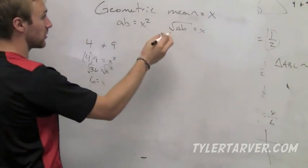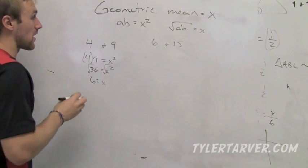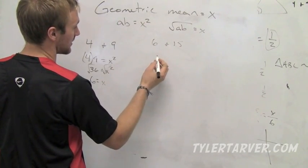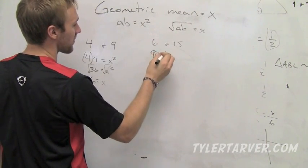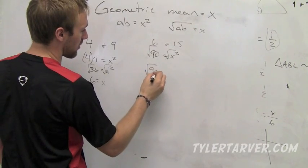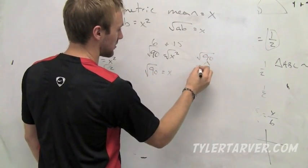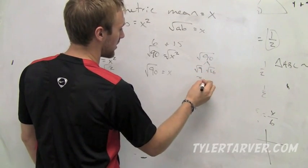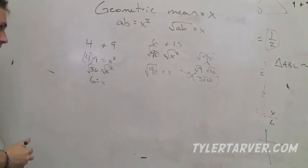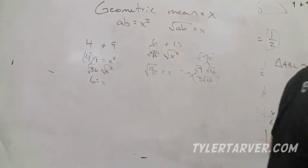Let's do it for 6 and 15. So 6 times 15 is 90 equals x squared. To get the square root, most of the time they're going to want simplest radical form. So we do the square root of 90. We know 9 goes into it: square root of 9, square root of 10. Square root of 9 is 3, so 3 square root of 10, and that's your answer.